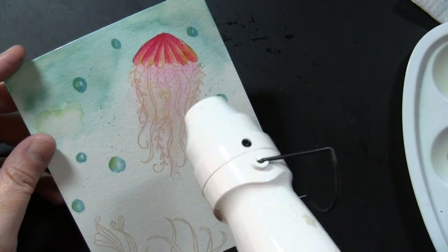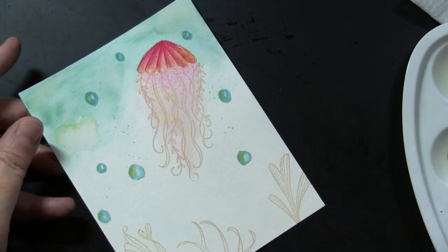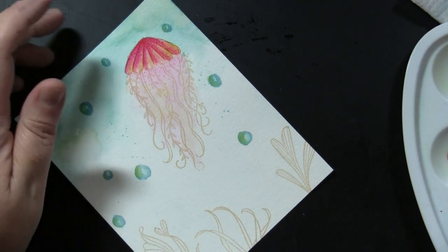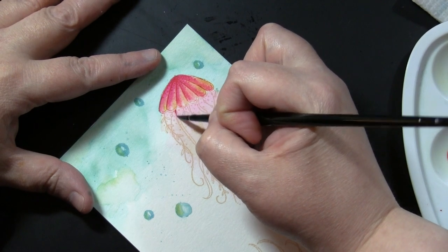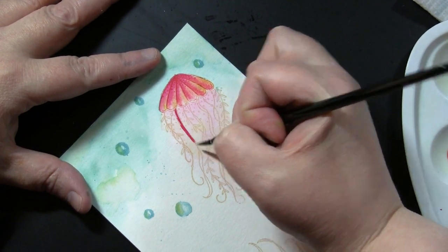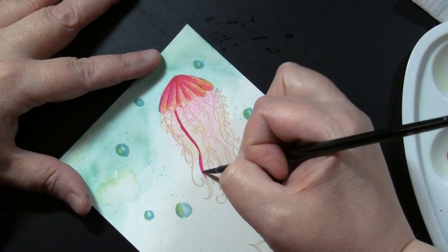So I'm going to dry this before I move on to the next step. That way, whatever color I add on top of it will help it not to bleed too much. I can stay within the lines as I paint these sort of tendrils or tentacles coming down.